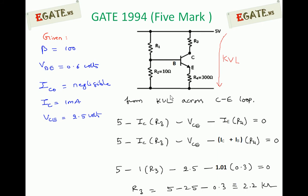From KVL across collector-emitter loop: 5 volts minus IC into R3, current flowing through it is IC, minus VCE, minus R4 into current flowing through it is IE. So minus IE into R4 equals 0.